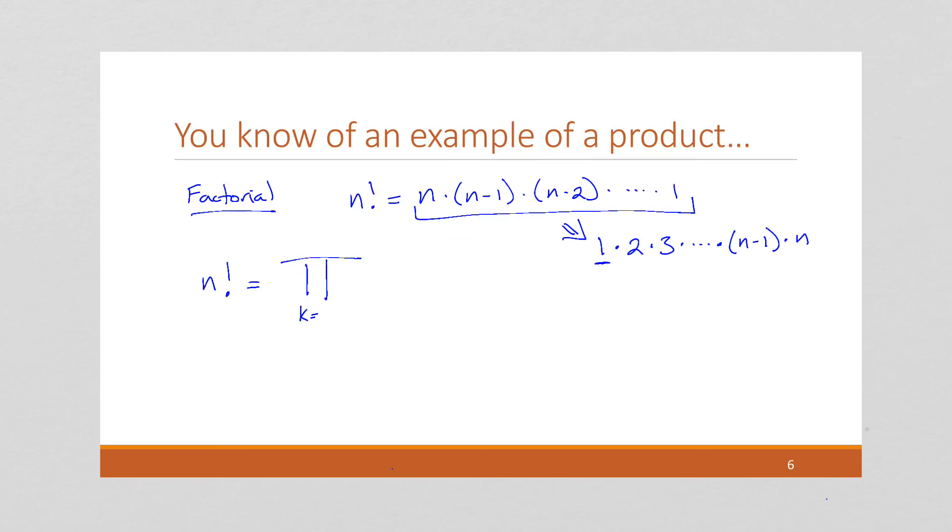So our starting value is this 1, and we go to n is our ending value. And what do we have? Each one of these terms is just our index. So there we go. And this is going to give us that. So n factorial is a product that you don't normally think of using this product notation, this capital pi symbol, but that's really what's going on.